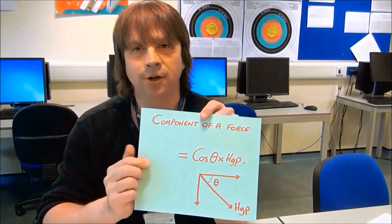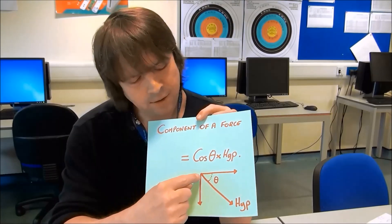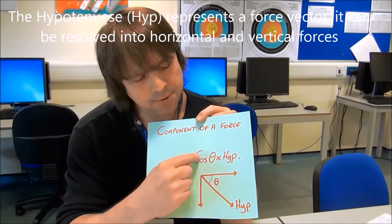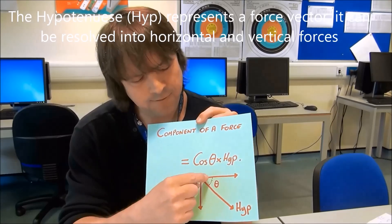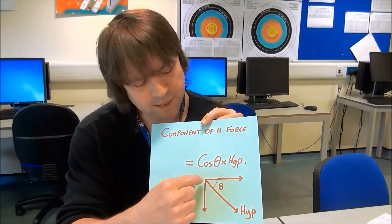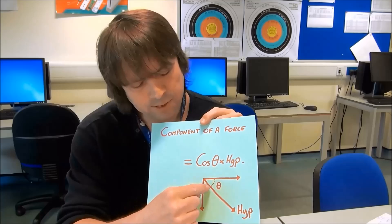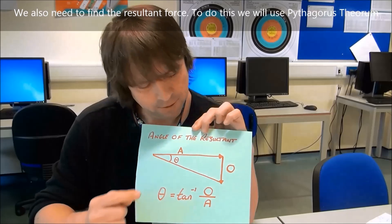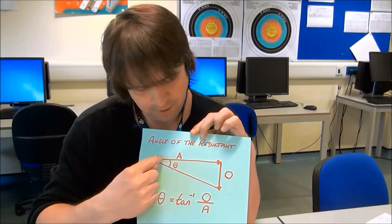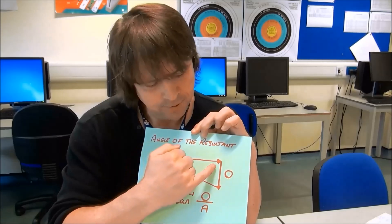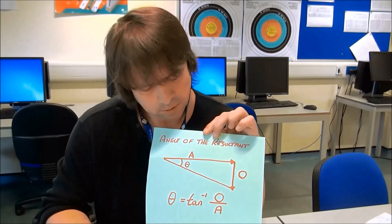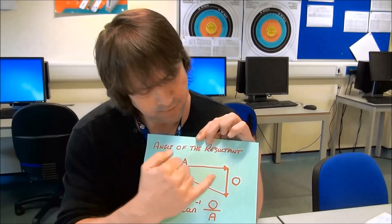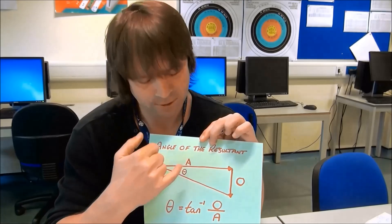We're going to be using two basic equations from trigonometry. The first one: as long as we know the force, the cosine of the angle times that force will give us the horizontal component, or if we use the other angle, the vertical component. When we've resolved all the forces in the system, the resultant force will usually form some type of angle from the overall horizontal and vertical forces. We can use the tangent — opposite over adjacent — to find that angle.